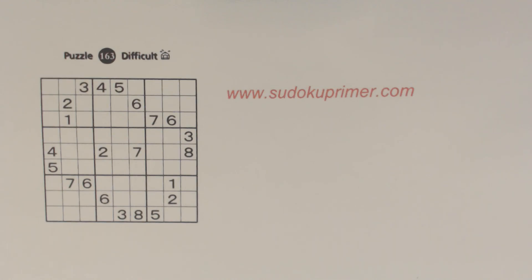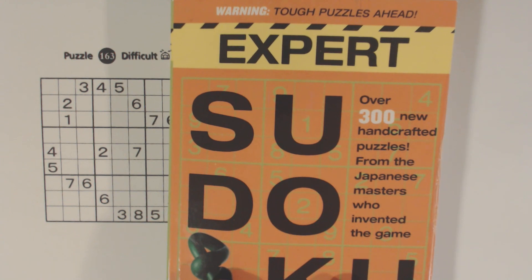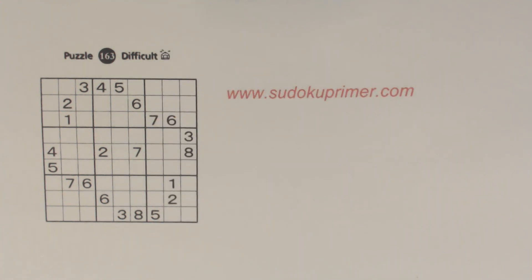In this video we're going to talk about Sudoku Ghost Numbers and the Ambiguity Rule, two techniques that are pretty useful in medium and harder puzzles. This is puzzle number 163, a difficult puzzle from Expert Sudoku by Nikolai Publishing. My name is Harold Nolte and there are over 160 videos on this channel about Sudoku and how to do all kinds of techniques to solve Sudoku puzzles.